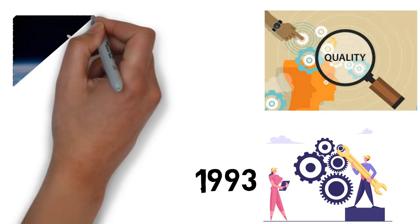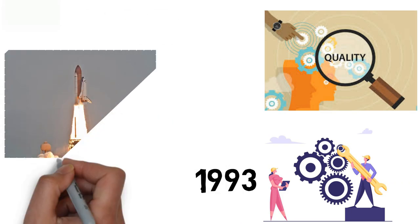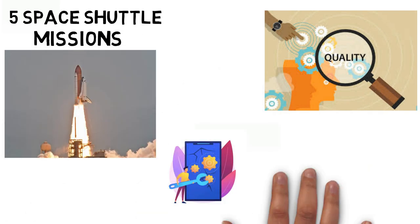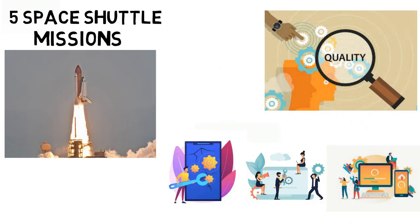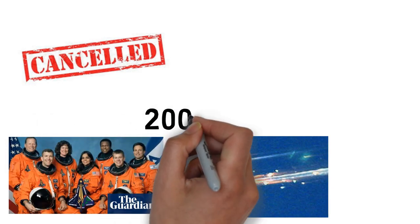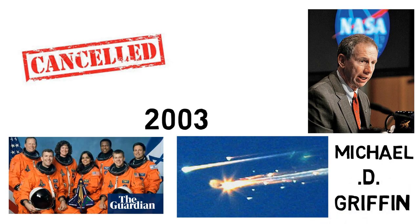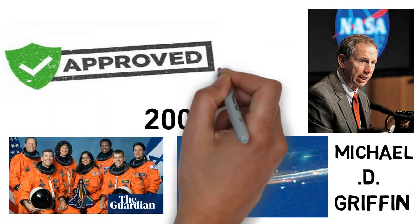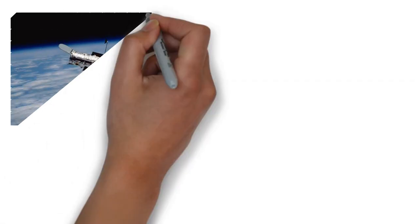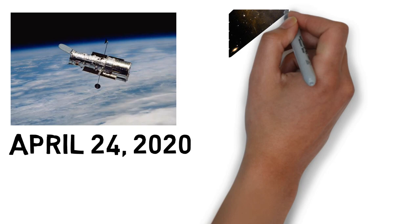The optics were corrected to their intended quality by a servicing mission in 1993. Hubble is the only telescope designed to be maintained in space by astronauts. Five Space Shuttle missions have repaired, upgraded, and replaced systems on the telescope, including all five main instruments. The fifth mission was initially canceled on safety grounds following the Columbia disaster in 2003, but NASA Administrator Michael D. Griffin approved the fifth servicing mission, which was completed in 2009. The telescope was still operating as of 2020, its 30th anniversary.